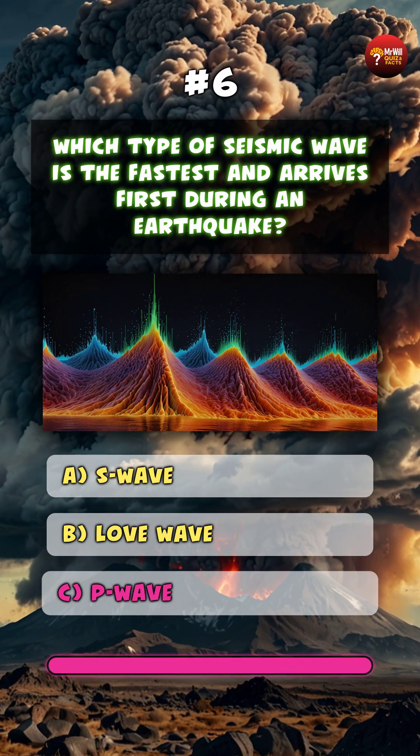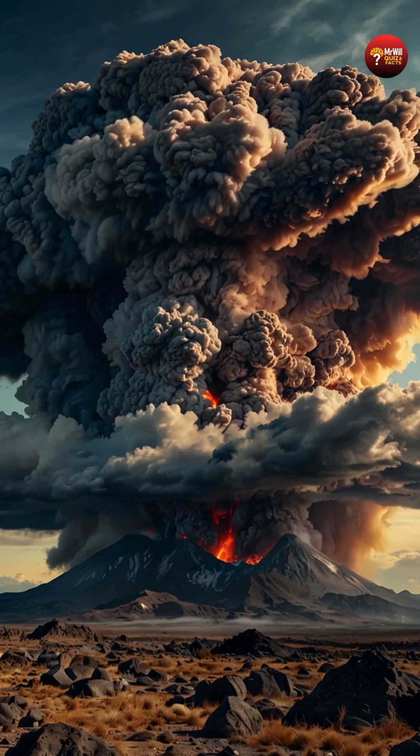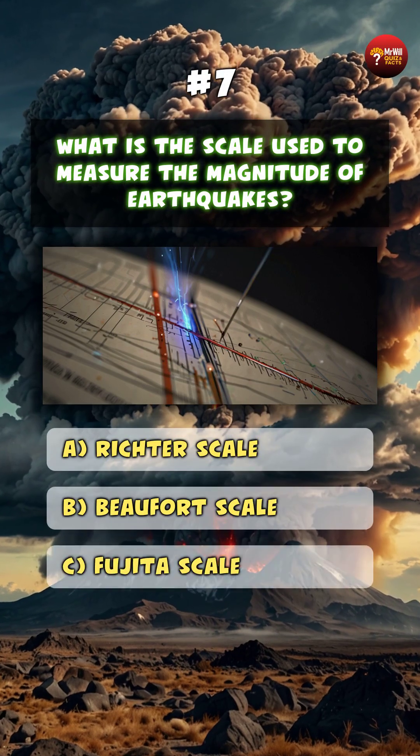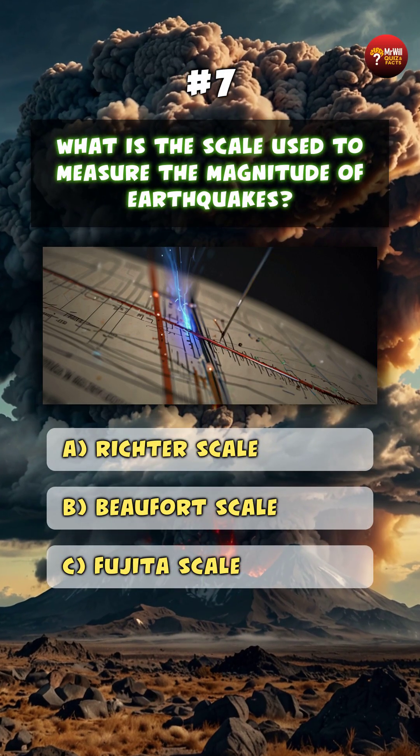Which type of seismic wave is the fastest and arrives first during an earthquake? C. P-Wave.